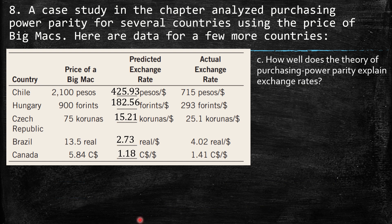Part C: how well does the theory of purchasing power parity explain exchange rates? As you can see, the results are kind of similar — maybe the Chilean one has the largest gap between the actual and predicted exchange rate. The other ones are closer, with generally lower values. This is a good estimate but not perfectly correct, as we saw in the chapter — there are different situations affecting the law of one price which is not actually true in all cases.